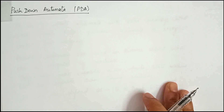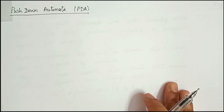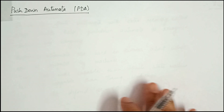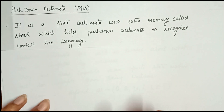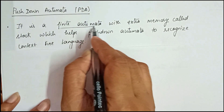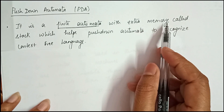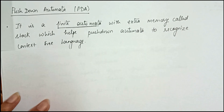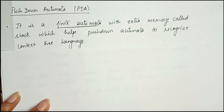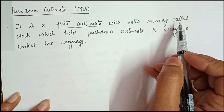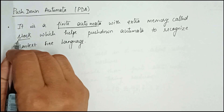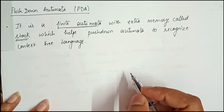Today we are going to discuss the next type of language model — the Pushdown Automata, or PDA. The PDA is just like a finite automata with some extra memory, which is a very advantageous fact. It has extra memory called a stack, which plays a very important role in the pushdown automata.